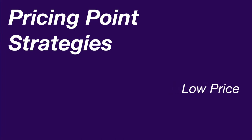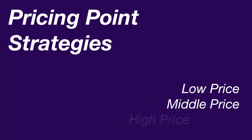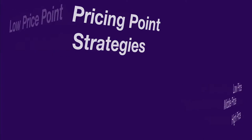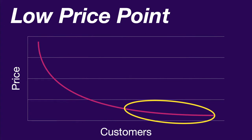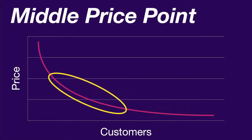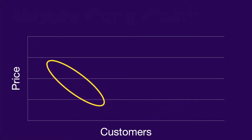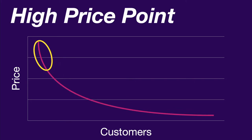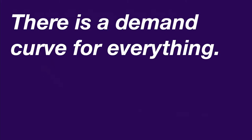I'm going to break this presentation into three different categories of price point strategies: low, middle, and high — again, oversimplified, but still helpful. If you're operating on a low price point strategy, you'd fall down here on the demand curve; middle would be here; and the high price point strategy would be up here. There's a demand curve for everything.